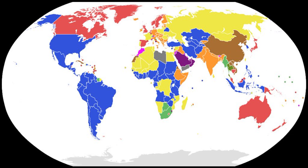The powers divided between president and prime minister can vary greatly between countries. In France, for example, in case of cohabitation — when the president and the prime minister come from opposing parties — the president oversees foreign policy and defence policy (generally called les prérogatives présidentielles, the presidential prerogatives), and the prime minister oversees domestic policy and economic policy.